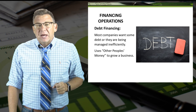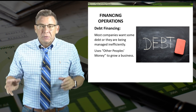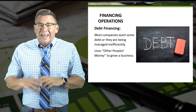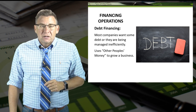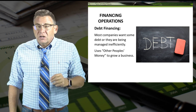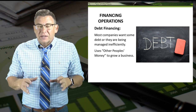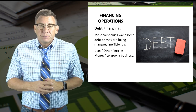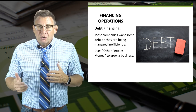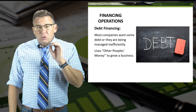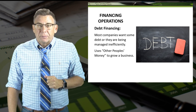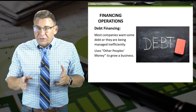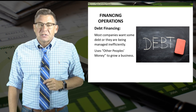Debt financing is sometimes referred to as OPM, or other people's money. The concept is fairly simple. Let's say you have $1,000 and an idea for a product that you can sell. If it requires $1,000 of material and produces a finished product that can be sold for $10,000, then you can earn $10,000. But if you went to a bank and borrowed $100,000 at the beginning, you could sell your products for a million dollars and be far wealthier much quicker by using other people's money.